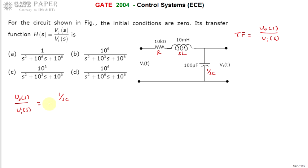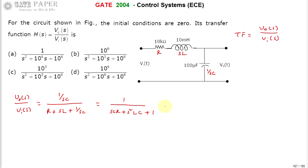Using the voltage divider rule, V_out(s)/V_in(s) equals (1/sC) divided by (R + sL + 1/sC). Taking 1/sC common in the denominator gives: sC·R + s²LC + 1. Rearranging, the denominator becomes s²LC + sRC + 1, which puts it into the standard second-order form.